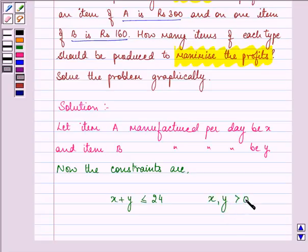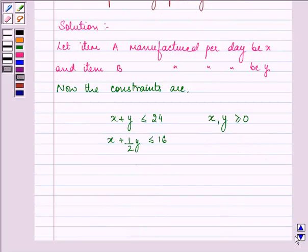Then we are given that it takes 1 hour to make item x and half an hour to make item y, and the total time should be less than or equal to 16. Or we can write this equation as 2x plus y is less than or equal to 32.